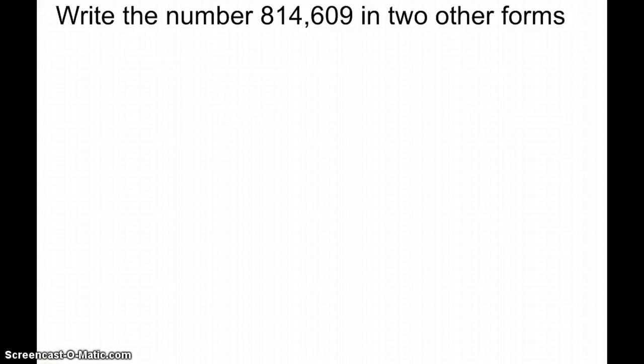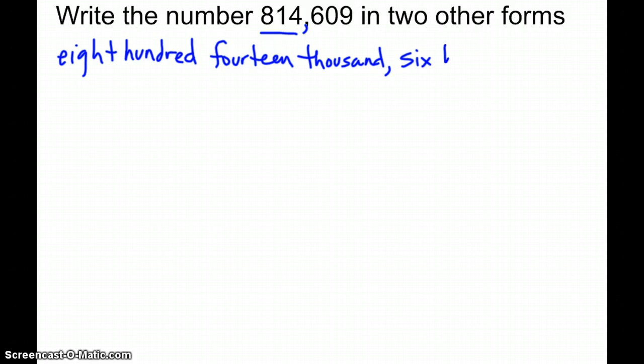The first form is really simple. It's just word form. So as long as you can say the number correctly, then you can write it. So it's 814,000 because we are in the thousands period to the left of that comma, so 814,000, 609.